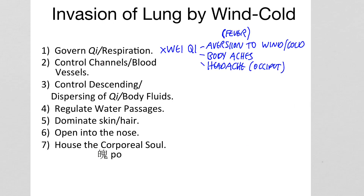Wind obstructs the Wei qi, causing aversion to wind and cold. There may be a fever if the pathogen is strong. Body aches and a headache, which is often in the occiput where the bladder channel runs.